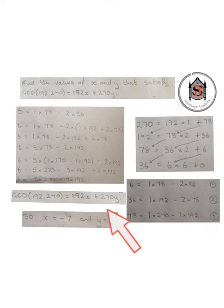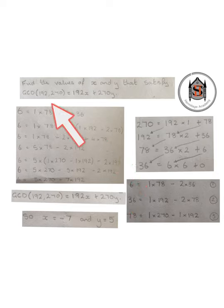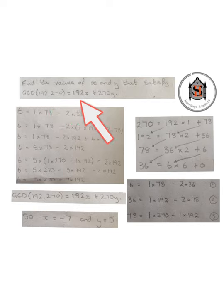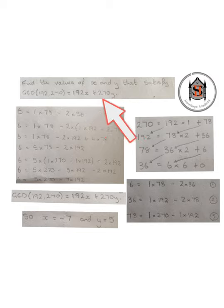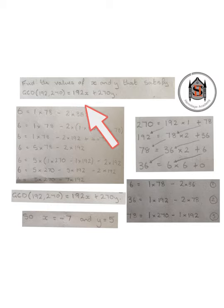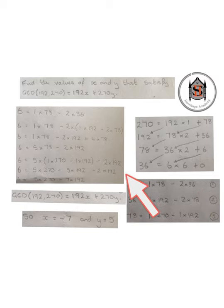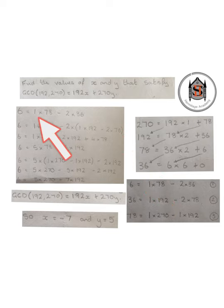Remember the goal is to get an equation with the greatest common divisor, which is 6, equal to 192x plus 270y. The only equation we have that equals 6 is equation number 1, and that's where we start. So we write: 6 equals 1 times 78 minus 2 times 36.